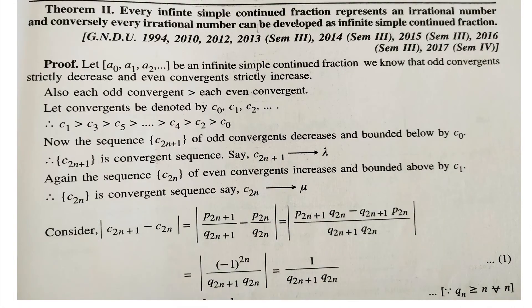Now this is a very important result: every infinite simple continued fraction can be represented by an irrational number. The converse is also true — every irrational number can be developed as an infinite simple continued fraction. Let us take a given infinite simple continued fraction and begin the proof.